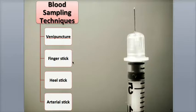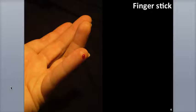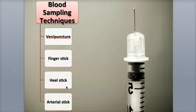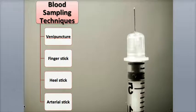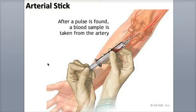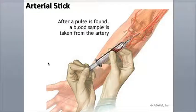A finger stick is another method of blood sampling, commonly used by diabetics as a way to easily monitor daily blood sugar. A heel stick is another sampling method often used to withdraw blood from infants and children. If one needs to know the amount of oxygen in the blood, an arterial stick can be performed. In an arterial stick, blood is withdrawn from a systemic artery in the wrist or arm, which carries oxygenated or oxygen-rich blood.